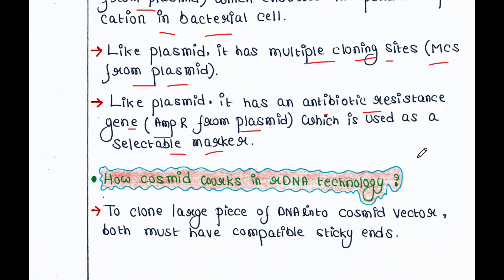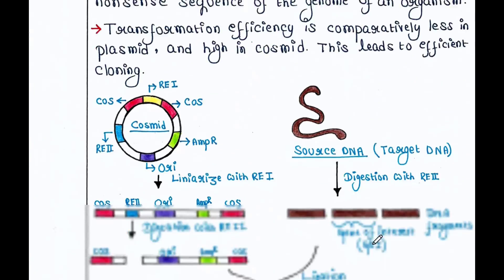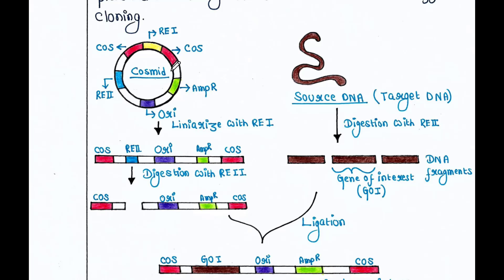Now, how does Cosmid work in rDNA technology? That is very important to understand. To clone a large piece of DNA into a Cosmid vector, both must have compatible sticky ends. Looking at the diagram: this is the Cosmid vector, with cos site 1 and cos site 2 — a Cosmid vector contains two cos sites which are joined together.